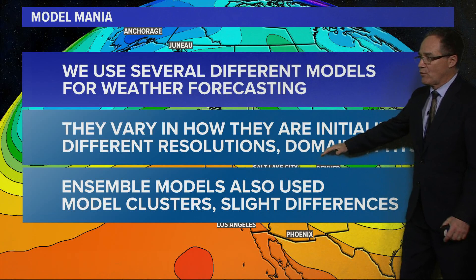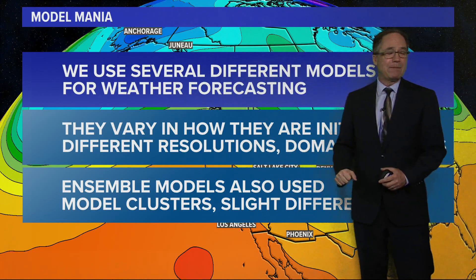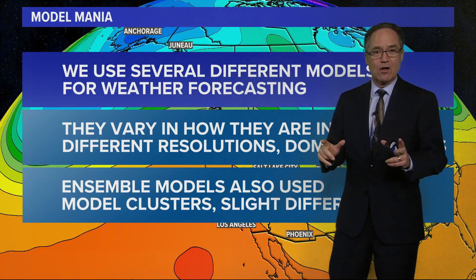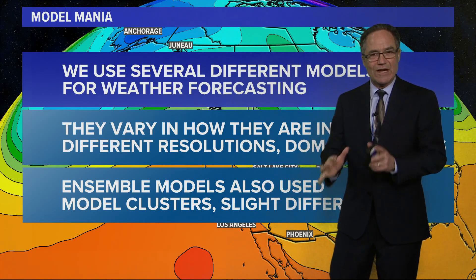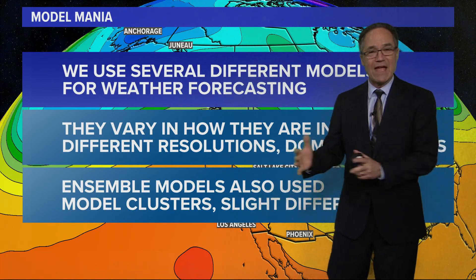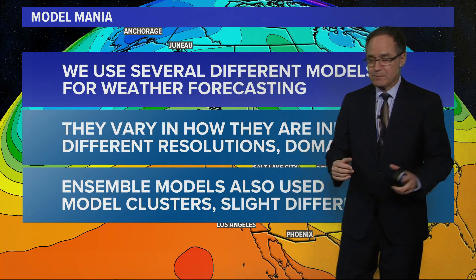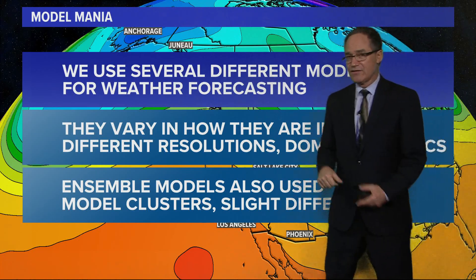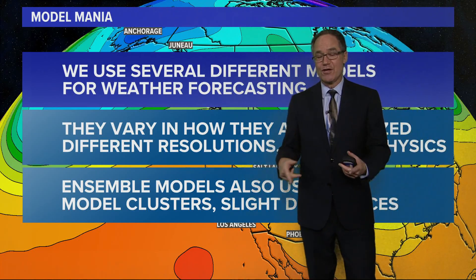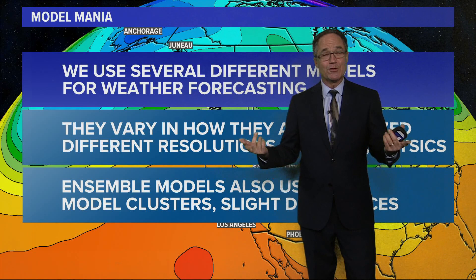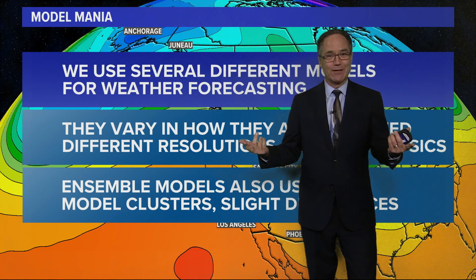We also use ensemble forecasting. Basically ensemble modeling is this: it's the same model, just tweaked with a lot of slightly different conditions to see how it behaves. If they all converge on the same solution, it gives us more confidence that the models know what they're doing. So that's what we're doing — the European model explained.